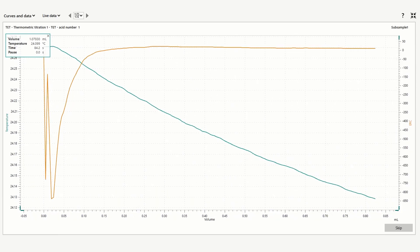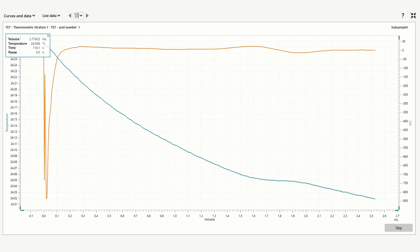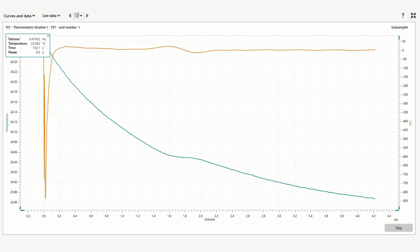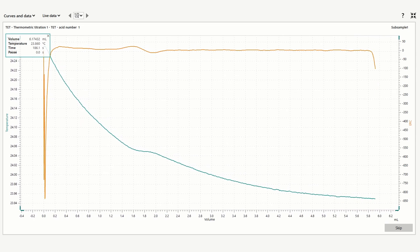One advantage of thermometric titration is the speed. Results are typically given much faster compared to potentiometric titration.